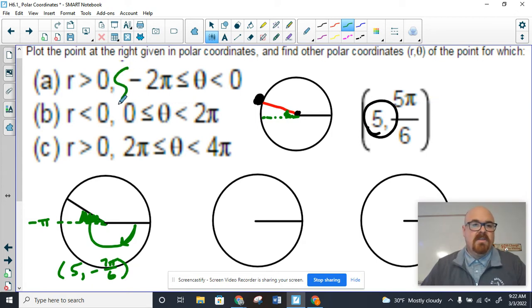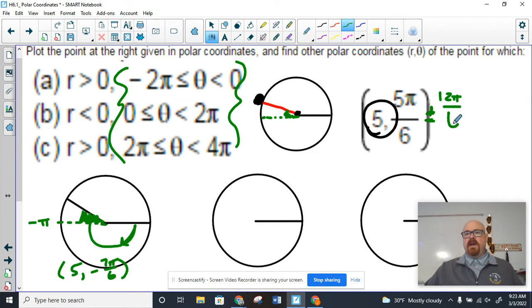An easier way to think about that is to use the formulas that we talked about. Really what you're finding is a coterminal angle, which we can find by adding or subtracting 12π/6, which is the equivalent of 2π. So if we subtract 12π/6 from 5π/6, we get -7π/6, which does fall in this interval.